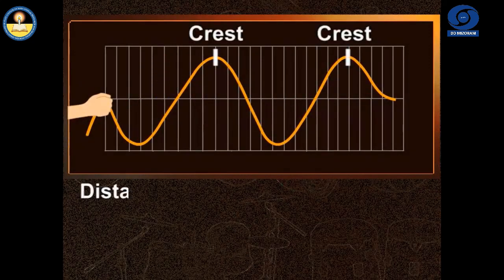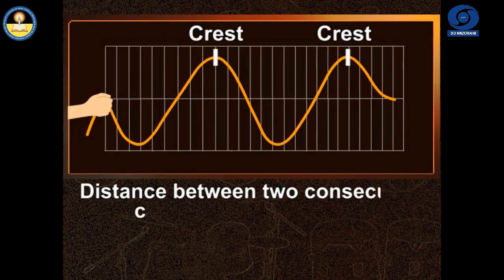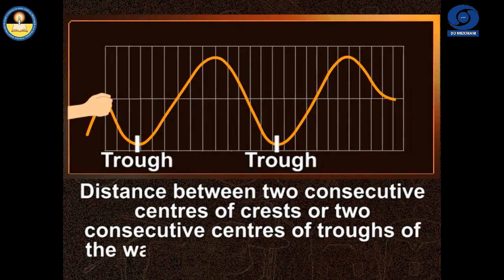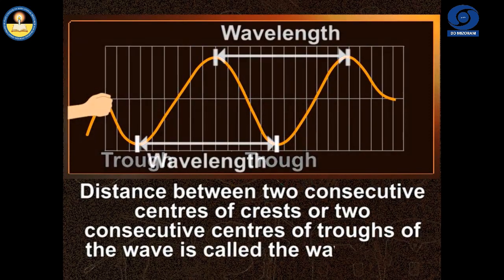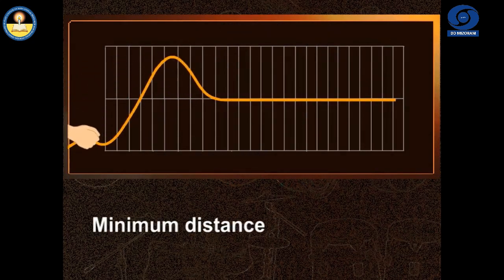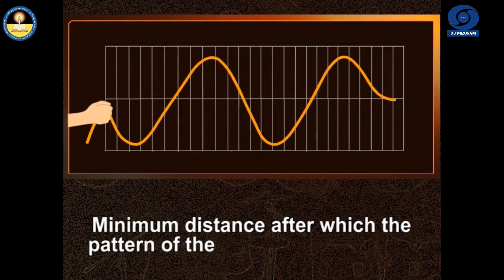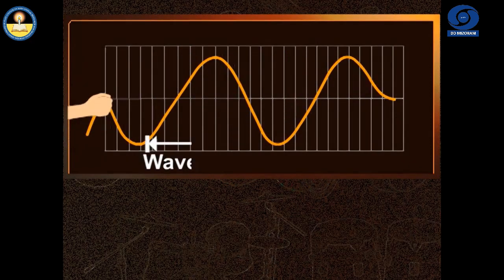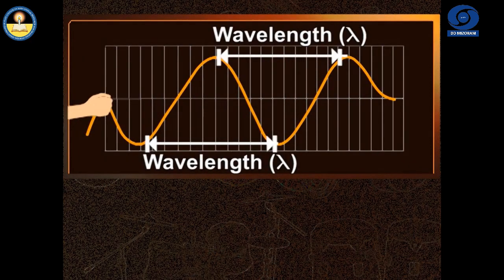In general, the distance between two consecutive centers of crests or two consecutive centers of troughs of the wave is called the wavelength. It is the minimum distance after which the pattern of the motion repeats itself. It is usually represented by the Greek letter lambda. Since it is the measure of the distance, therefore its SI unit is meter.